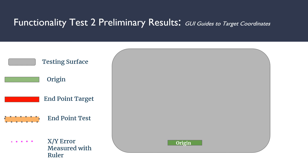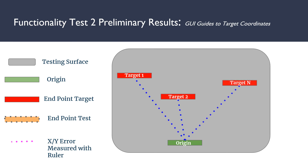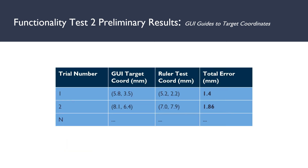For Functionality Test 2, the GUI would guide us to the target points on the table. We marked points on the table with a piece of tape and dragged the probe to these points and saved them in the system. Then we allowed the GUI to guide us to these points by relying on the GUI alone to show us where to travel on the table, and saved these points. Finally, we measured the offset with a ruler in millimeters between what the target point was saved as and shown on the table as a piece of tape, and where we ended up on the table. The Functionality Test 2 preliminary results are shown here. We defined our initial target coordinate by visiting the pieces of tape, then used the GUI to guide us back to these points, shown in the third column as the ruler test coordinate, and looked at the difference between these two coordinates to calculate the total error.